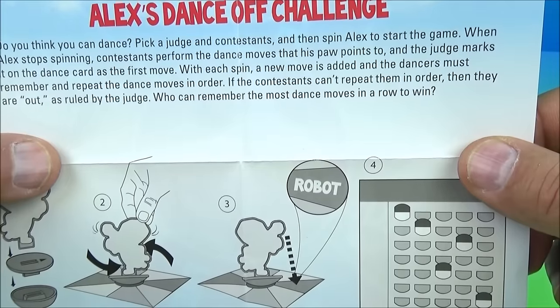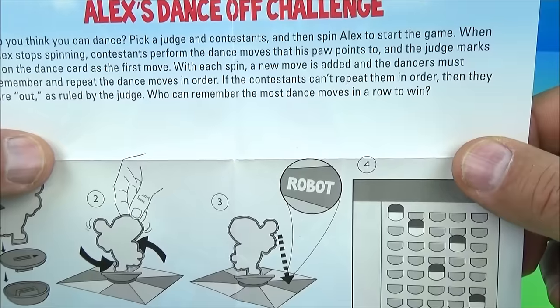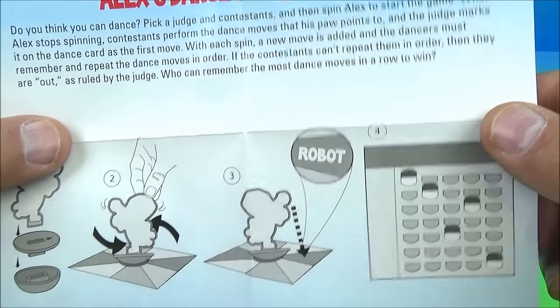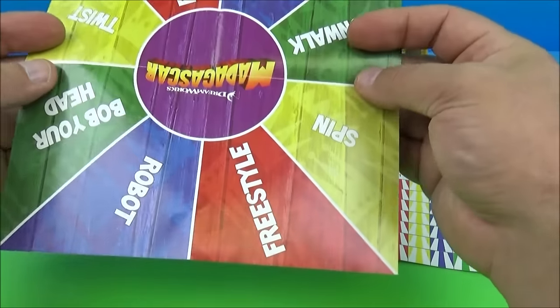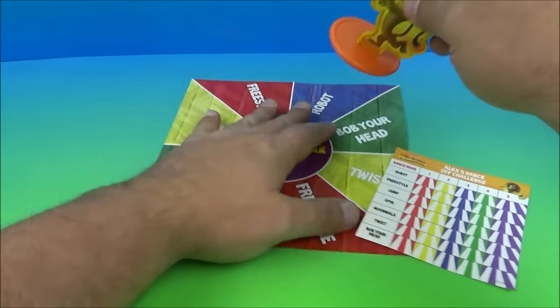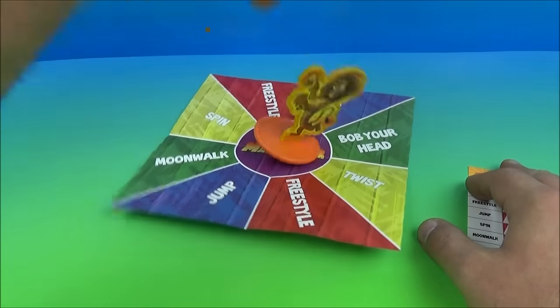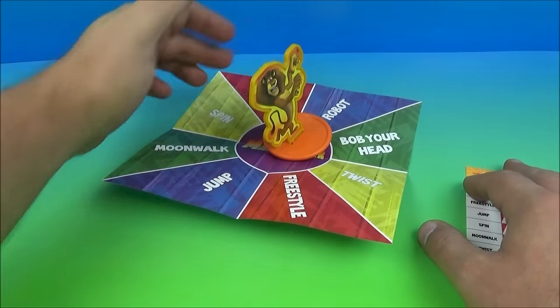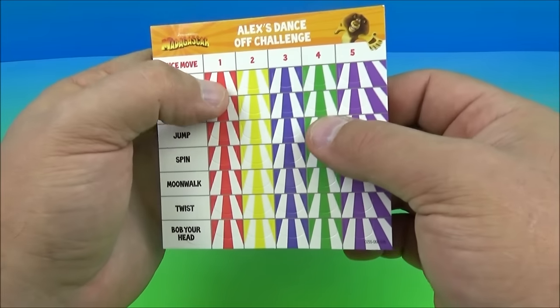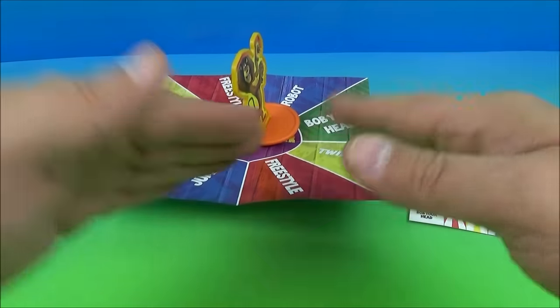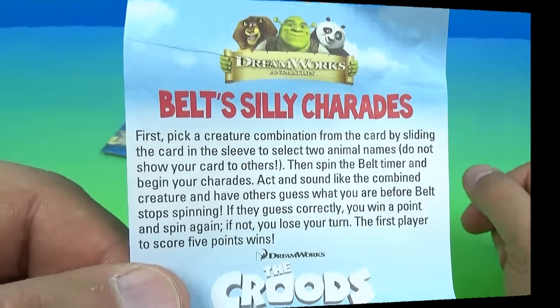The judge marks it on the dance card as the first move. With each spin a new move is added and the dancers must remember to repeat the dance moves in order. If the contestants can't repeat them in order, then they are out. So you place Alex right here, you give him a spin, and wherever he lands on, the robot for example, then you come here, you mark off the robot and then do the robot dance.